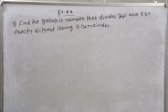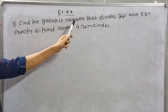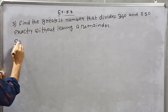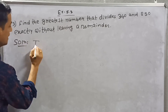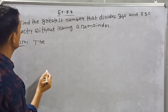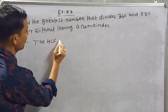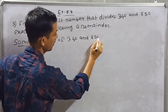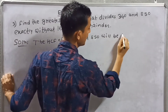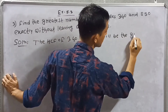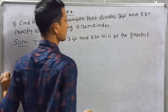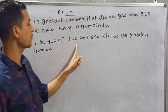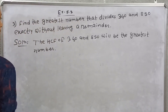Now number 3: find the greatest number that divides 340 and 850 exactly without leaving a remainder. The HCF of 340 and 850 will be the greatest number.